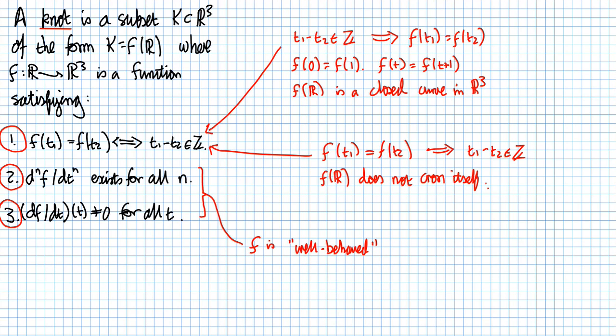So what is a knot? It's a nice smooth loop inside R³ that does not cross itself. How about some examples of this? Let's look at some of those.